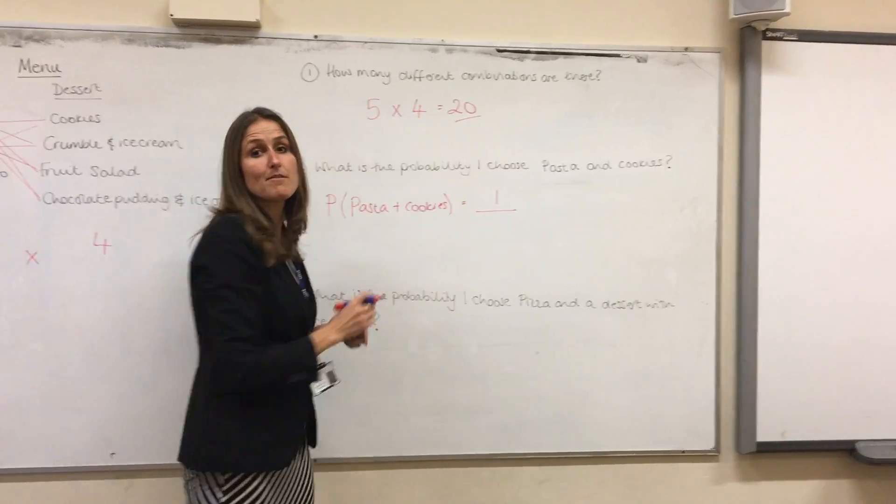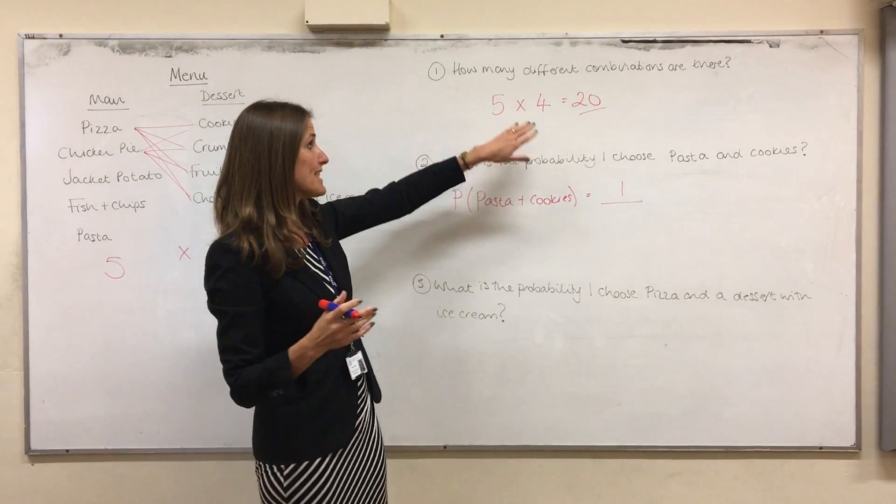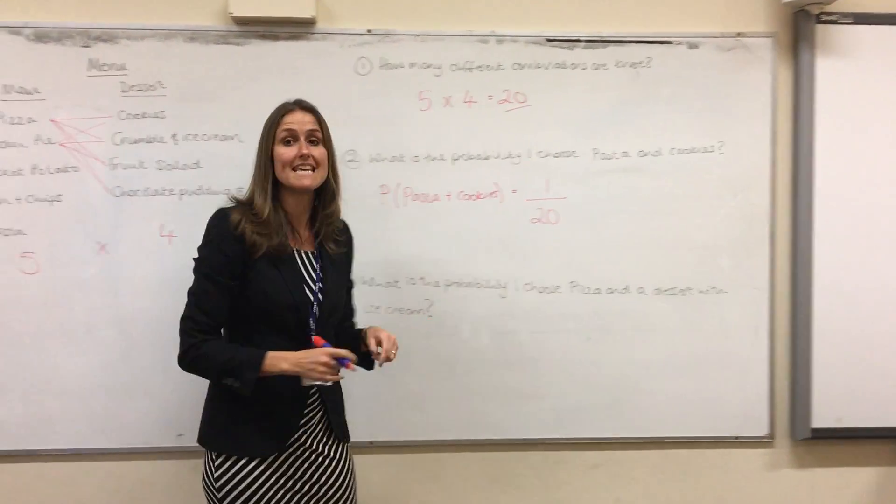And then the denominator of my fraction is always the total number of different options you can have. Well, we've already worked that out as twenty, so for this question the probability is one over twenty.